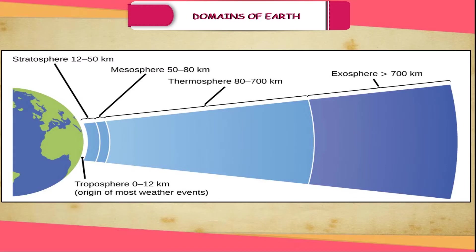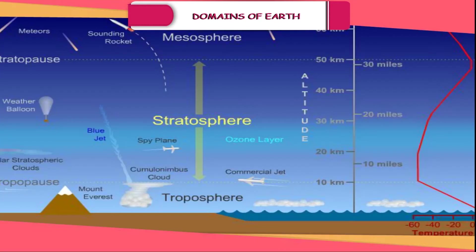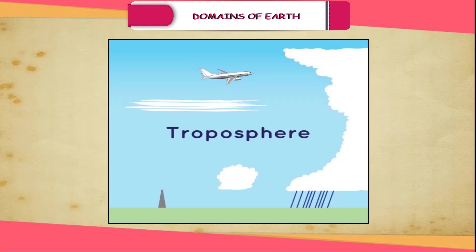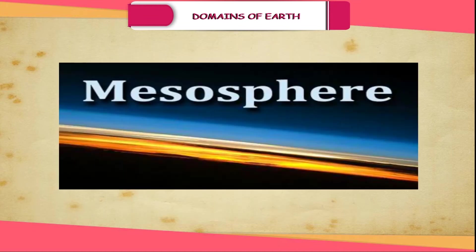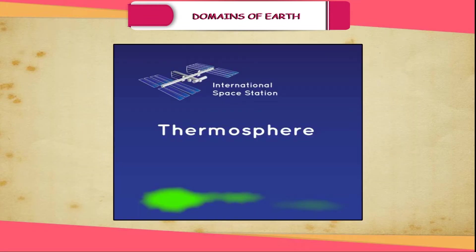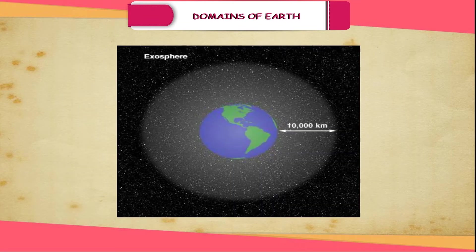The atmosphere is divided into five layers depending on composition, temperature and other properties. These layers are called the stratosphere, the troposphere, the mesosphere, the thermosphere and the exosphere.